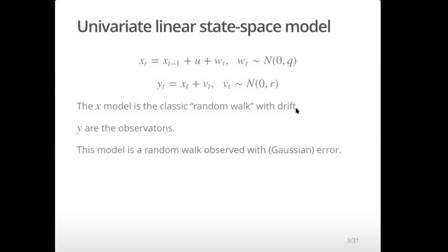Let's start with the equation for a really simple state space model. This is a univariate linear state space model. The structure of these models is we have something called a state — that's going to be our x. We're always going to use x's for states. This is a hidden state, so a state space model has a hidden part. And then we have our observation part of the equation. We're always going to call that y.